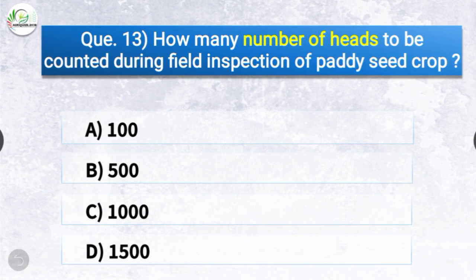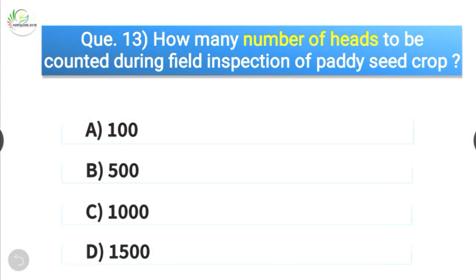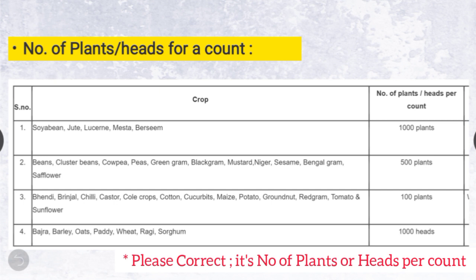Question number thirteen: How many heads are to be counted during field inspection of paddy seed crop? The options are 100, 500, 1000, or 1500. The correct answer is option C — 1000. This chart explains the number of plants per count: for soybean, jute, lucerne, and berseem — 1000 plants; for beans, cluster beans, cowpea, peas, green gram, black gram, mustard, niger, sesame, bengal gram, and safflower — 500 plants; for bhindi, brinjal, chili, castor, cole crops, cotton, cucurbits, maize, potato, groundnut, red gram, tomato, and sunflower — 100 plants; and for bajra, barley, oats, paddy, wheat, ragi, and sorghum — 1000 heads.